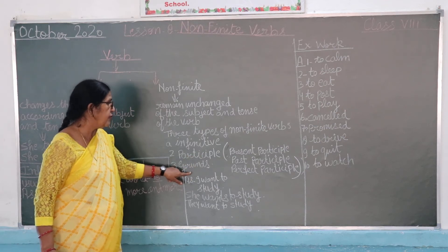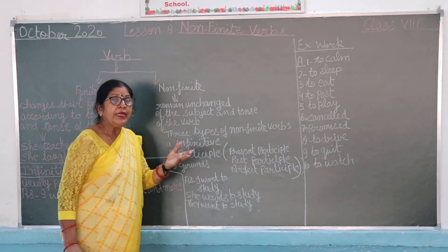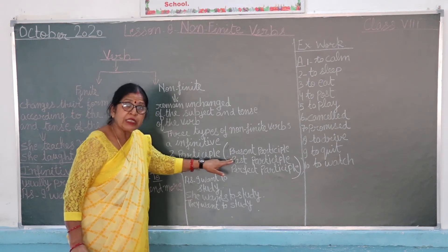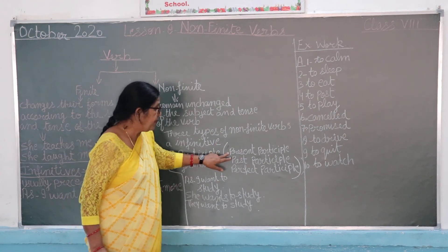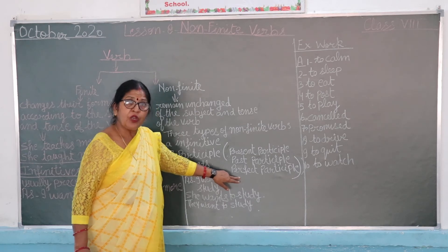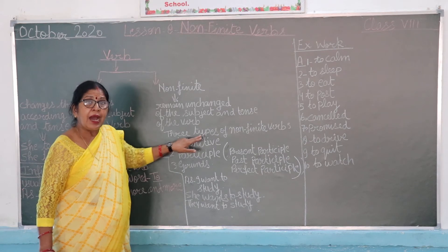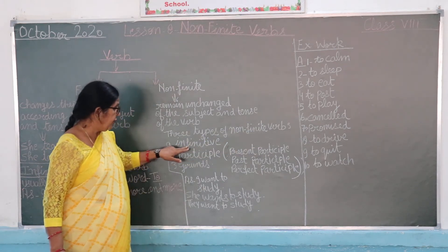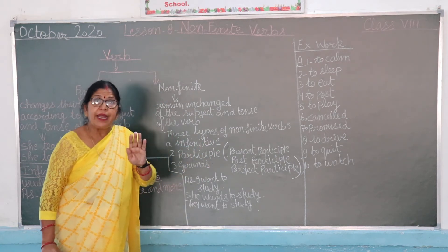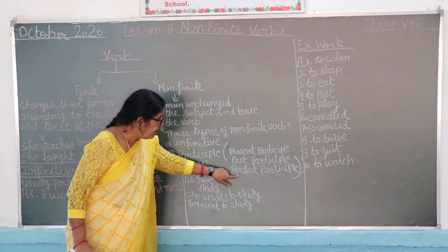Participle has three sub-types: Present Participle, Past Participle, and Perfect Participle. Non-finite verbs are of three types — first is the Infinitive, second is the Participle, and third is the Gerund. Participle also has three types: Present Participle, Past Participle, and Perfect Participle.